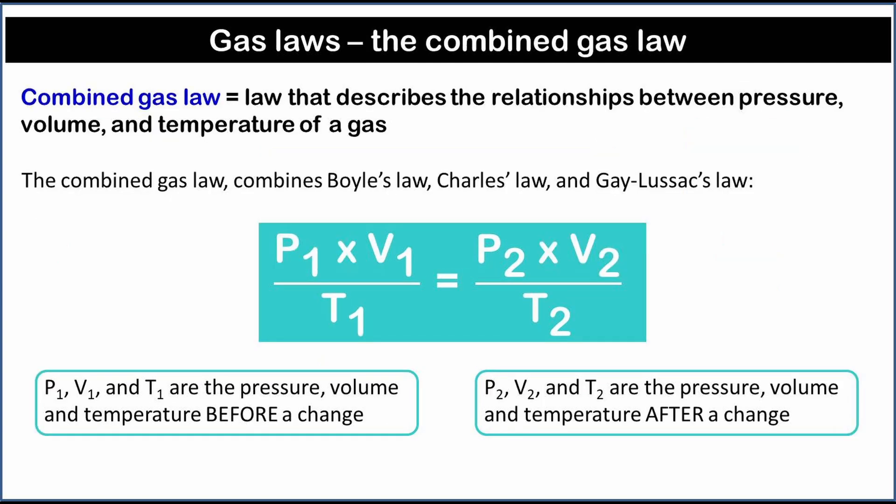The combined gas law is the law that describes the relationships between pressure, volume, and temperature of a gas. The combined gas law combines Boyle's law, Charles' law, and Gay-Lussac's law. The subscript 1 refers to the gas conditions before a change, and subscript 2 refers to the gas conditions after a change. The temperature must be in Kelvin.